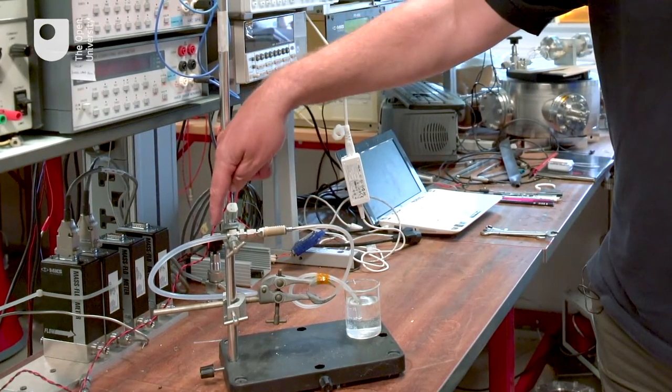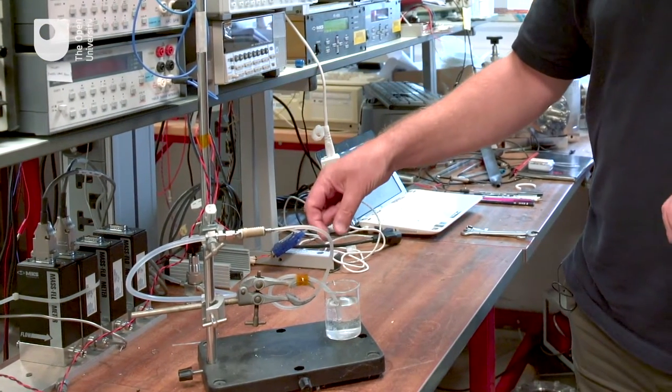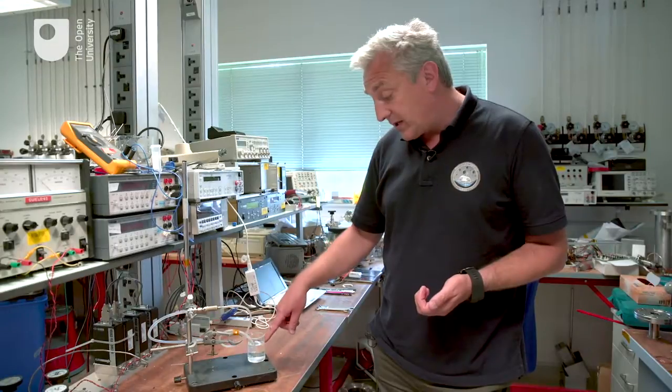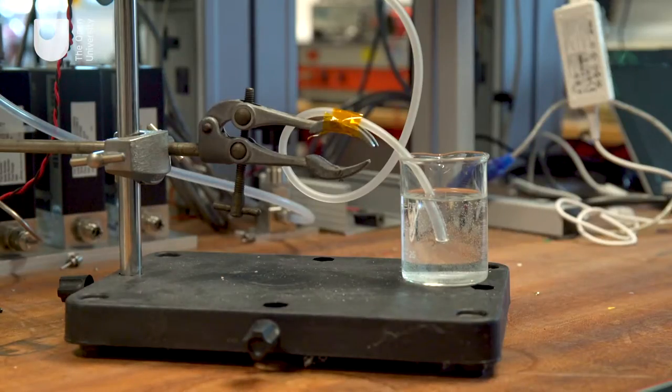We have an inlet of high-pressure gas on one side, and then a tube out to atmosphere into a little beaker so we can see what's happening with the bubbles.